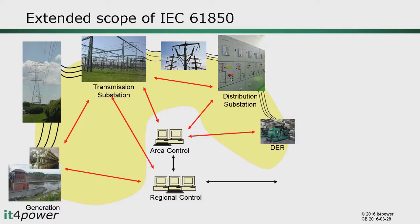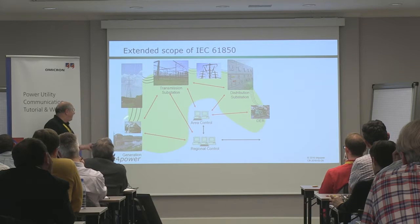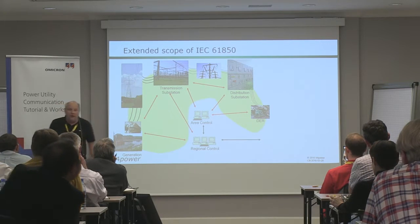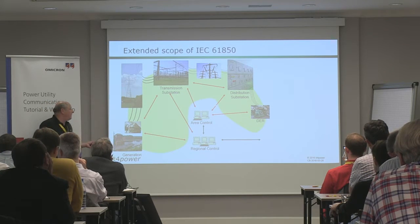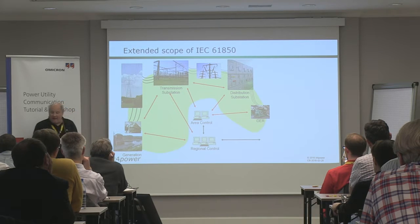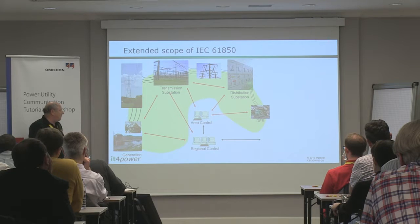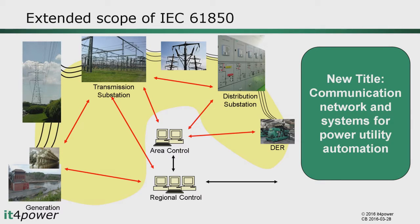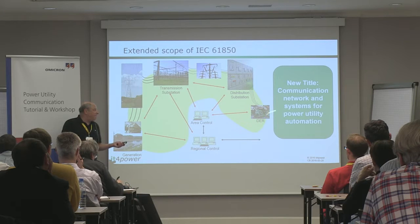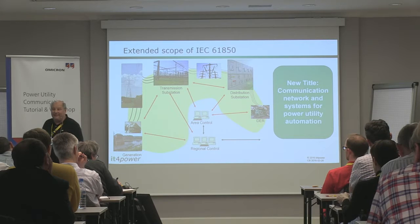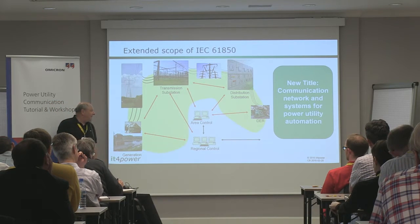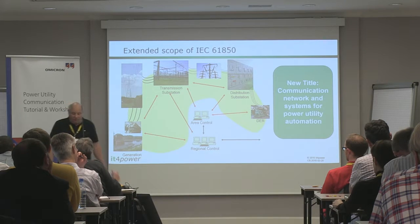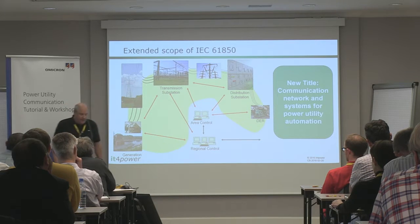61850 now includes communication between substations, monitoring and control of hydropower plants, integration of distributed energy resources and wind turbines, and communication toward area and regional control centers. As a consequence, the title of the standard series has been changed to 'Communication Networks and Systems for Power Utility Automation.' It is an IEC standard for electrical applications, though in principle it could also be used in other utility domains like water or waste.